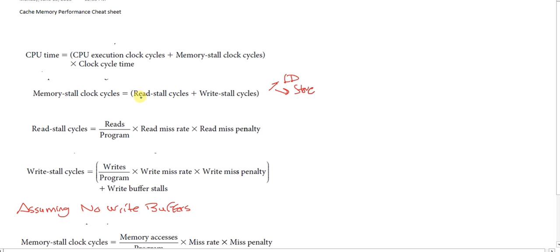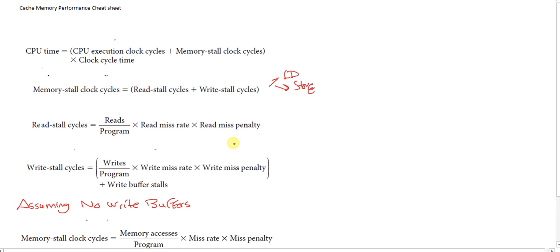Let's take the read stall clock cycles. The read stall clock cycles are the total reads per program, times the read miss rate, times the read miss penalty. Seems logical.